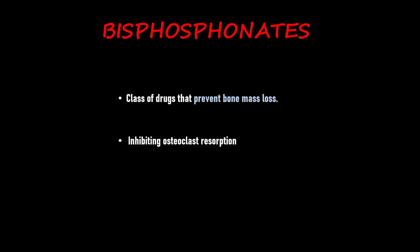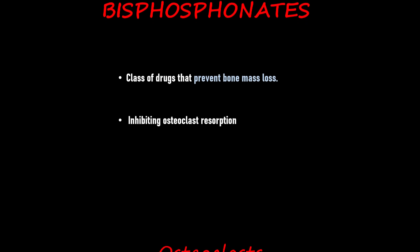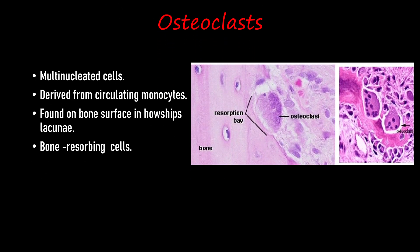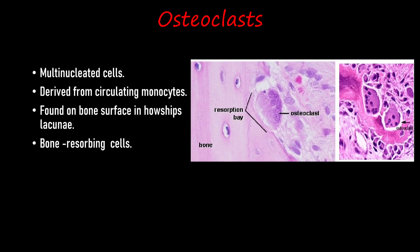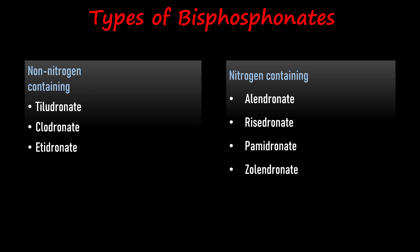Bisphosphonates function by inhibiting the function of osteoclasts. Osteoclasts are multinucleated giant cells derived from circulating monocytes. These are found on the surface of the bone, situated in Howship's lacunae, and function by resorbing the bone.